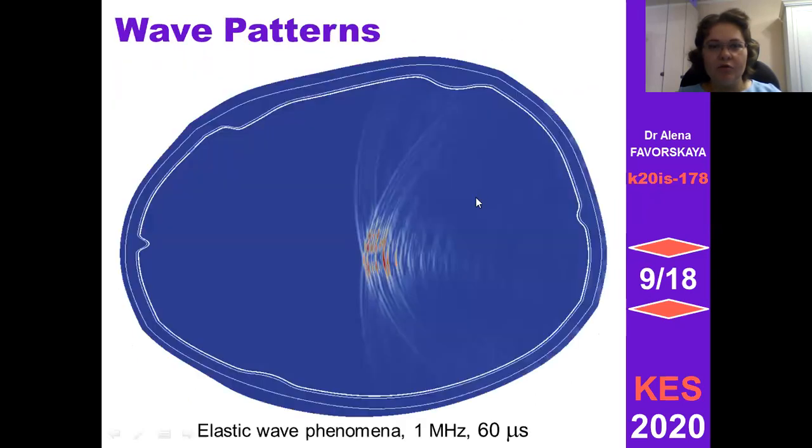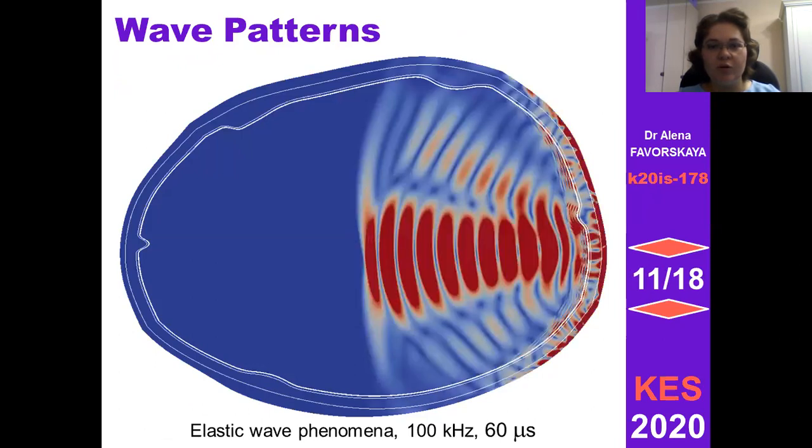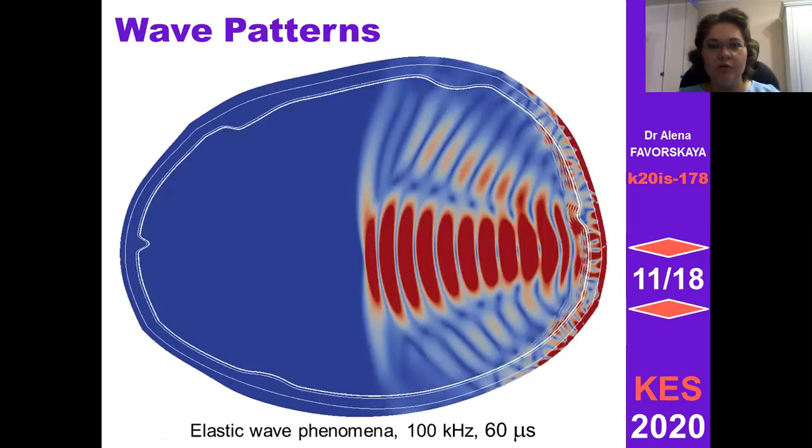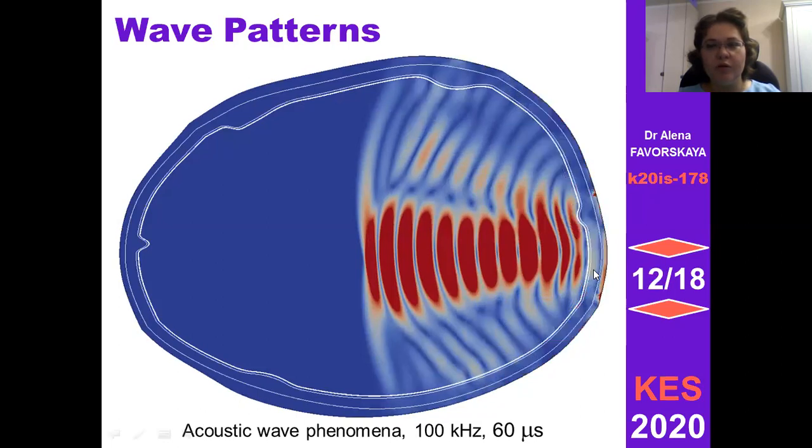So let's move on to wave pattern pictures with different frequencies and different time moments. You can see that when wave is propagated from the source to the center of human head, there is no significant difference between acoustic and elastic wave phenomena. Also for another frequency there is the same result. But for other frequencies, there are a lot of waves in skull, skin, and fat layers, and they are absent in the case of acoustic wave phenomena.